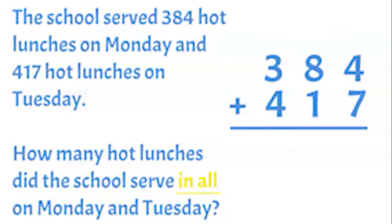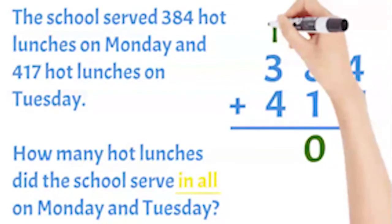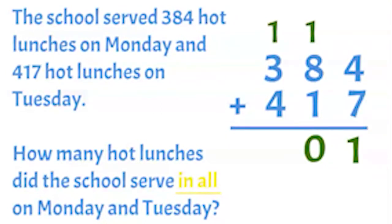Got it! 4 plus 7 equals 11. I will write a 1 below and carry over the 1 extra 10 to the tens place. Now 8 plus 1 plus 1 equals 10, so I will write a 0 below and carry the 1 extra 100 to the hundreds place. Last, 3 plus 4 plus 1 equals 8, so I will write an 8 below. So the school served 801 hot lunches in all on Monday and Tuesday.